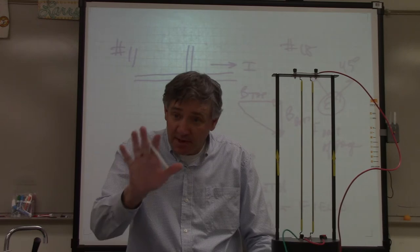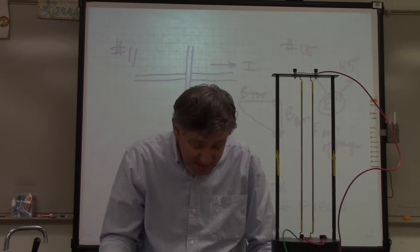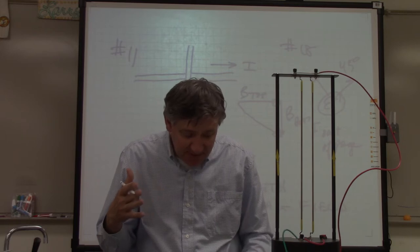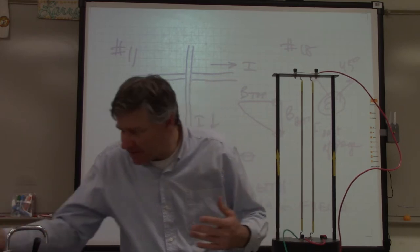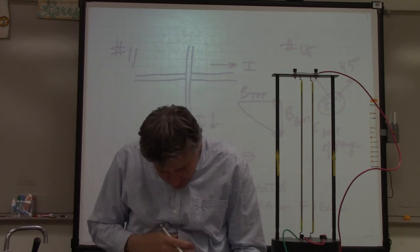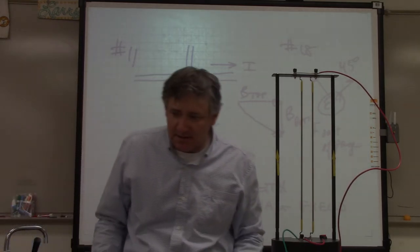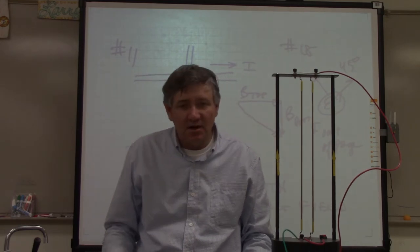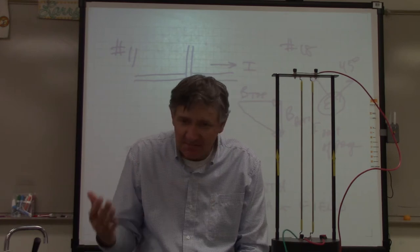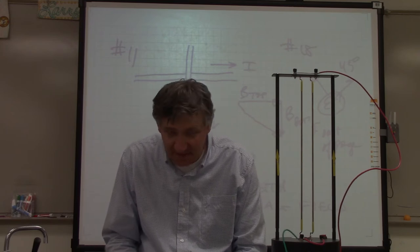Here's a hint: your answers on problems 8 and 9 should be the same. Number 8 is about the magnetic field generated from transmission lines, and number 9 is the electric blanket. The reason I chose those problems is that, yes, there's a magnetic field from transmission lines, but if you compare it to the magnetic field of the Earth, it's only about 4% of the Earth's magnetic field — and that's if you're standing directly underneath them.